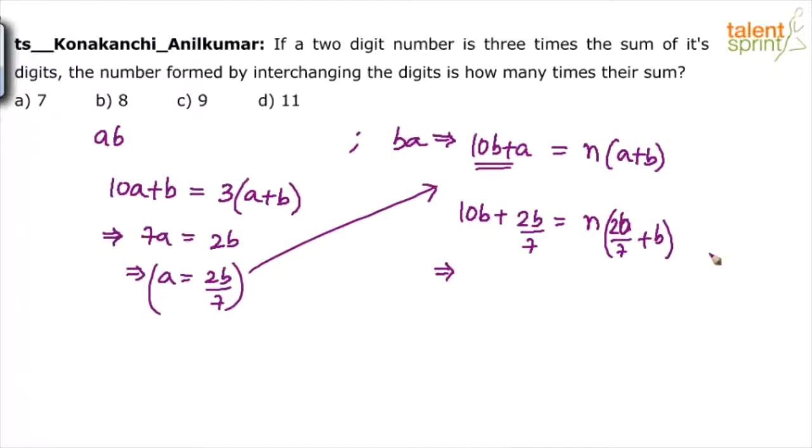So B gets cancelled overall. We will be able to find out N here. So 70 plus 2, 72B equals to N into 2B plus 7B, 9B. 7 and 7 anyway gets cancelled in the denominator. So what is N? N will be equal to 72 by 9 which is 8. So it will be 8 times which is option B.